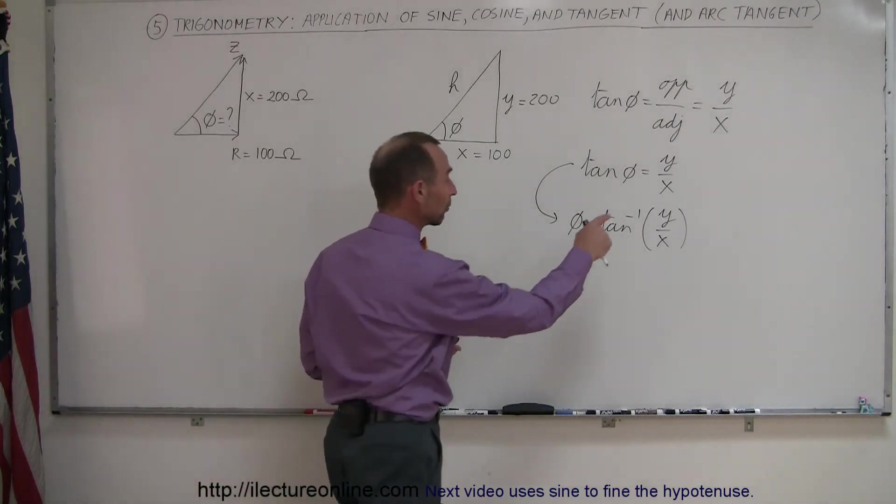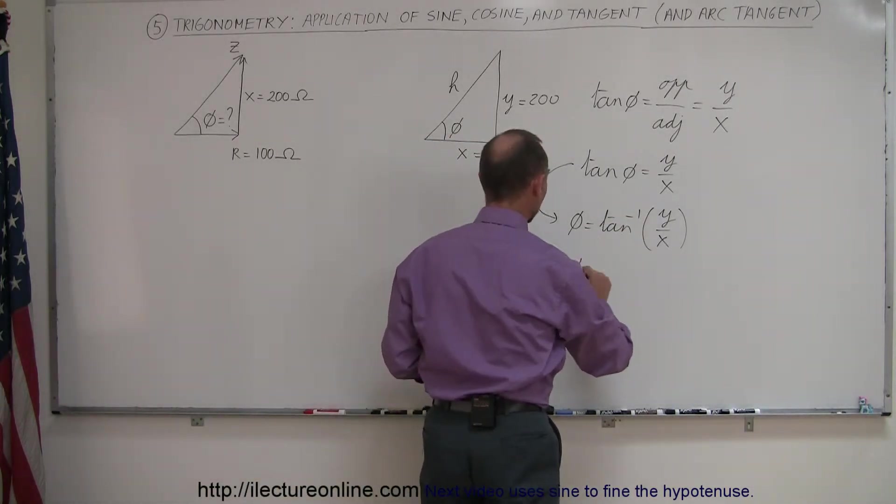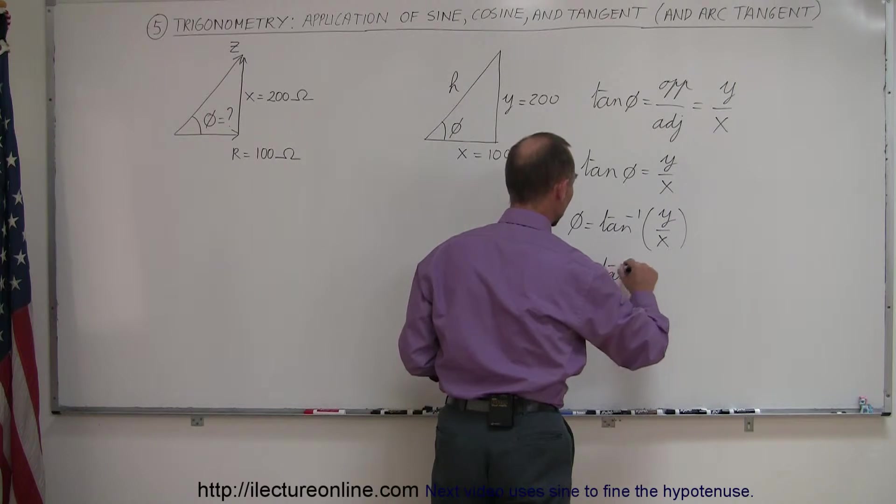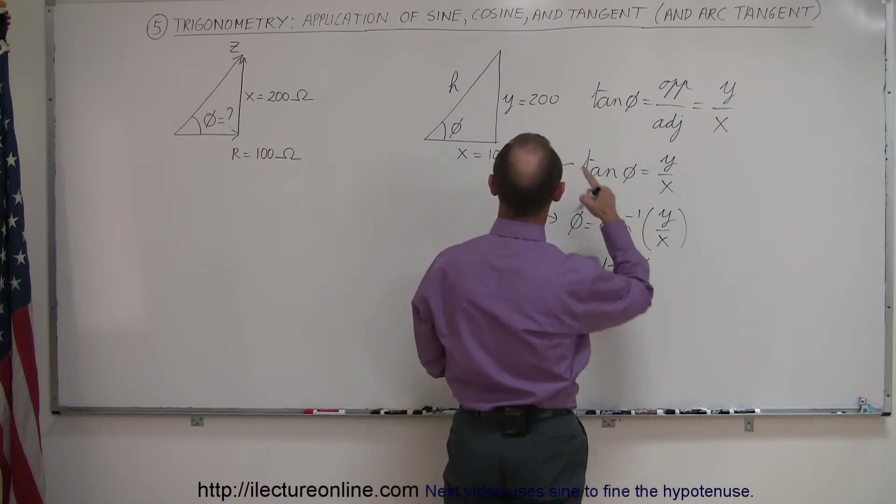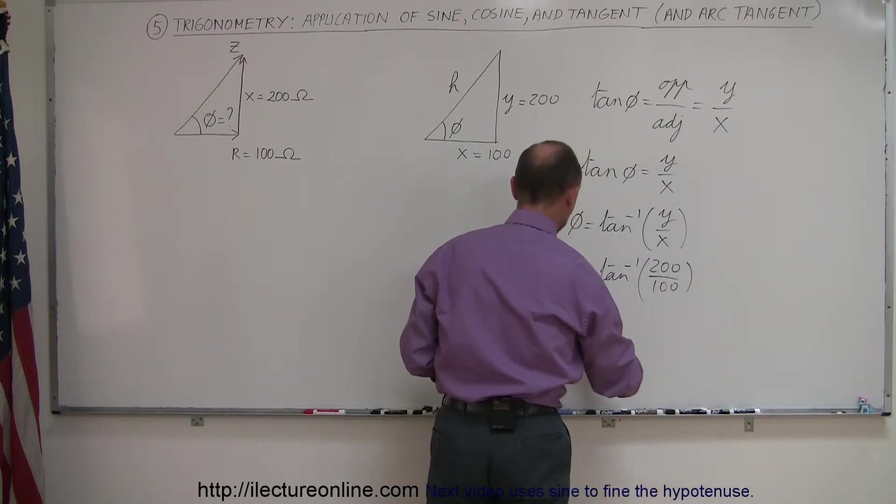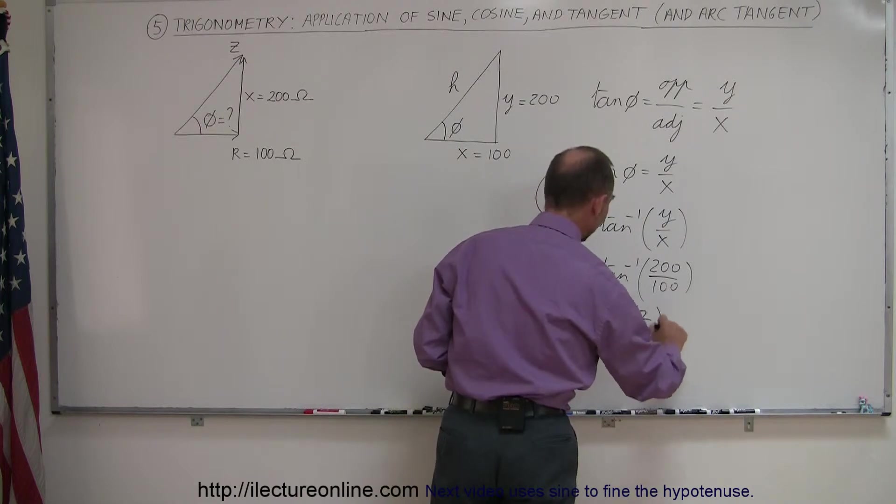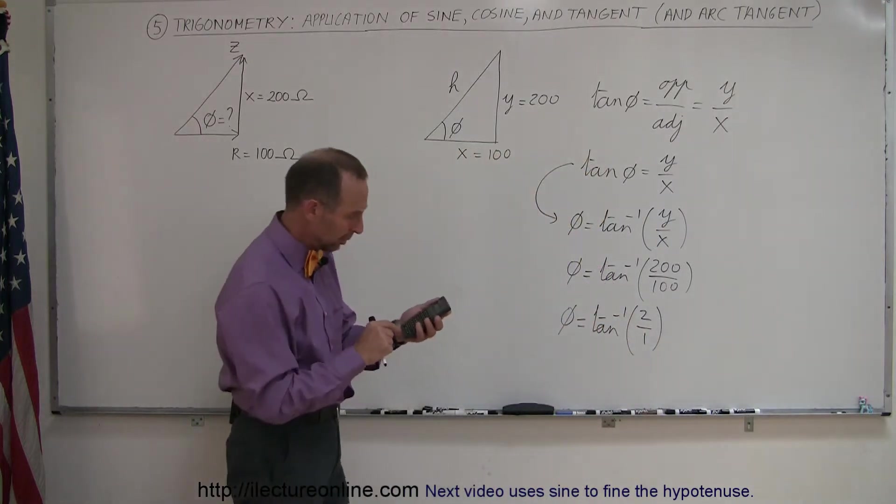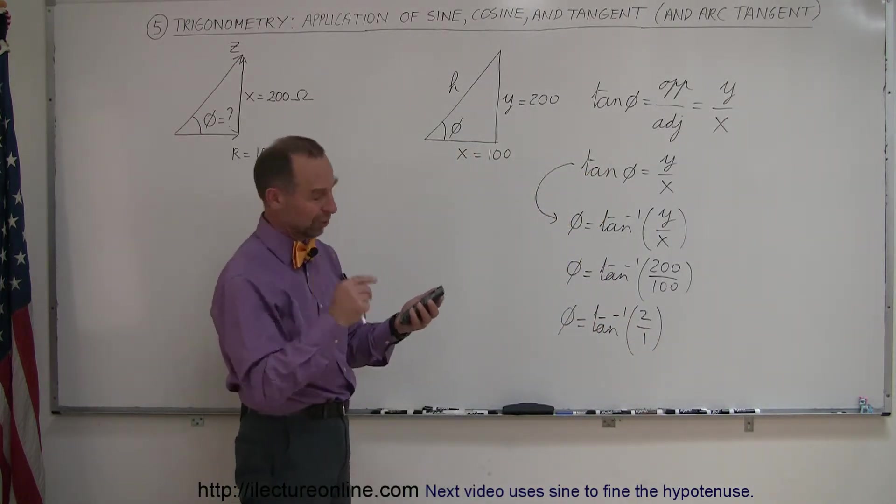So what we're going to do now is plug in the values. So the angle phi is equal to the arctangent of y. And in this case, y was 200, and x is 100. So basically, what we're doing is we're finding the angle whose arctangent is 2 over 1. So what you do now with your calculator, you go 2 divided by 1. We know that's 2.